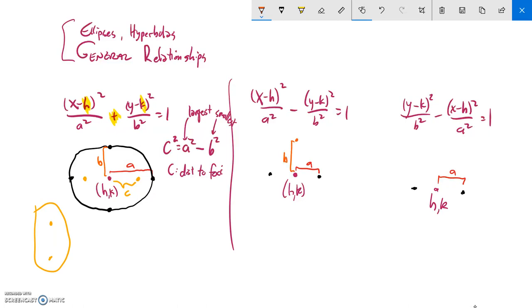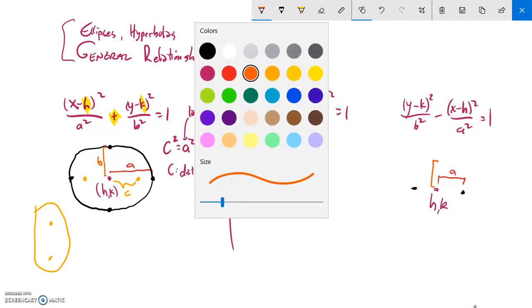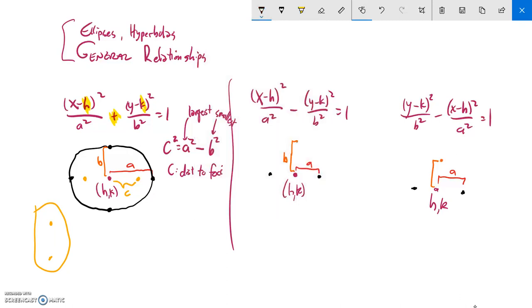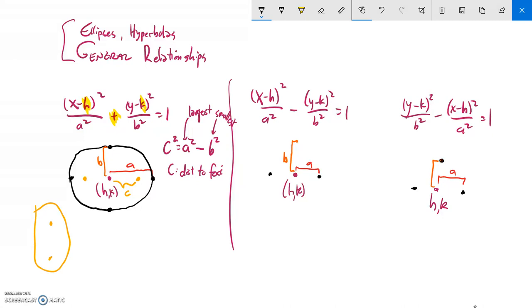So this distance right here would be b, however long b is. And notice it's b squared under there, right? So I have to square root it. So I'm going to have b in some direction.